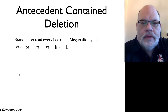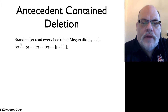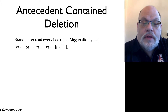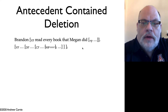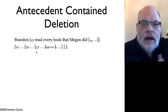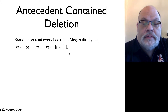Let's recall what the problem is. In antecedent-contained deletion, a sentence like 'Brandon read every book that Megan did' — the verb phrase that's omitted seems to be contained within the verb phrase that is its own antecedent. What did Megan do? She read every book that Megan did. So it's an infinite loop: the thing that is elided is within its own antecedent. That's graphed here, where we have a verb phrase that's elided and it is indexed with something that contains it.